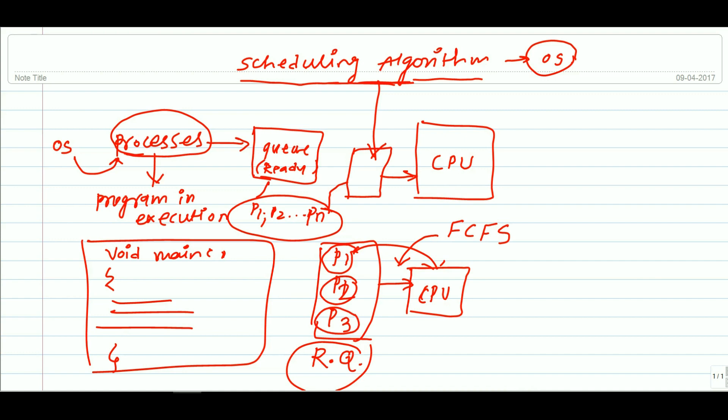second one and then third one. So the scheduling algorithms basically decide which process to execute or which process to execute first for the CPU. So this is the basic thing related to scheduling algorithms.